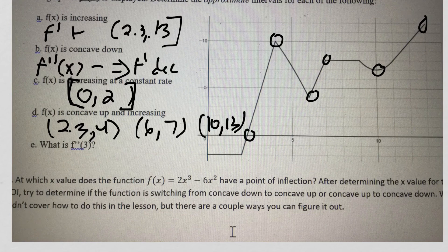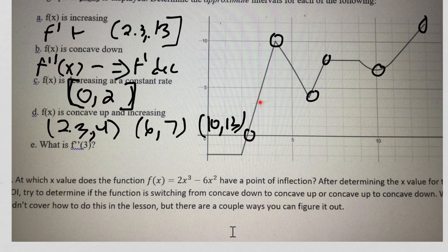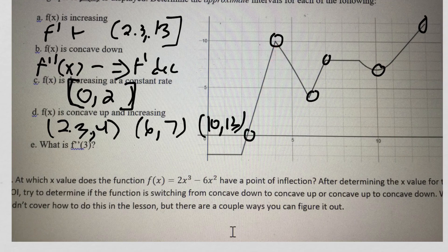Finally, f double prime 3. So we're just going to go to x equals 3. 1, 2, 3, here it is. Remember that f double prime is the slope of f prime. This is a straight line. So we just need to figure out what the slope of this straight line is.